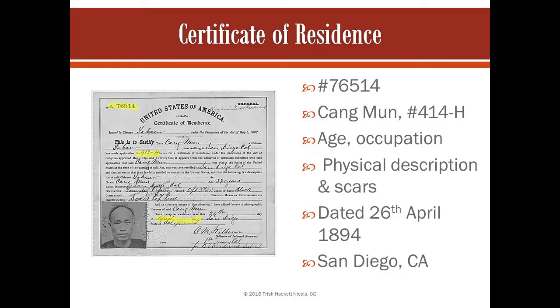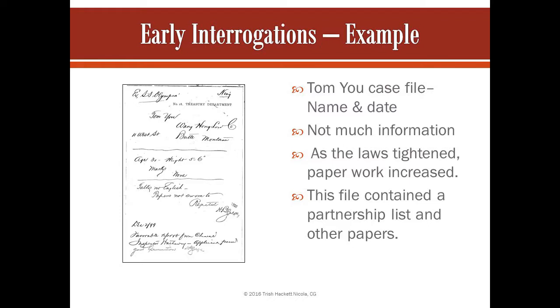I'm going to tell you about what's available at the National Archives in Seattle. This is a certificate of residence. In 1892, with the Geary Act, this started to be required. It has the file number, the name of the person, his application number for this certificate, his age, occupation, and physical description — which included scars, because it would be hard to fake a scar. The form was signed by an individual and dated, the place where the application was made was noted, and it included his photo.